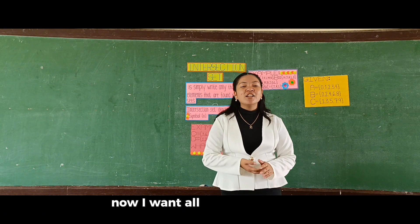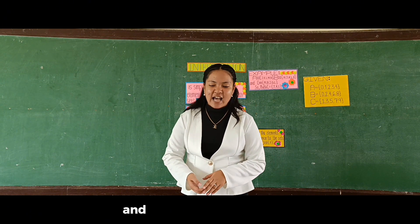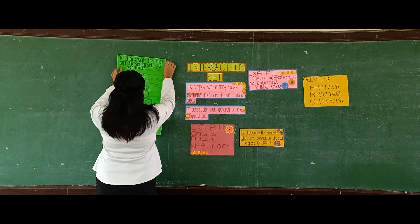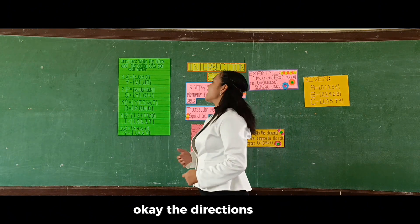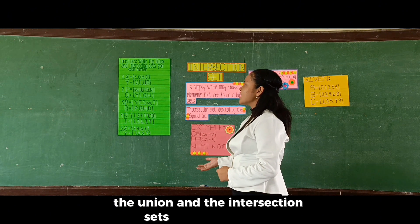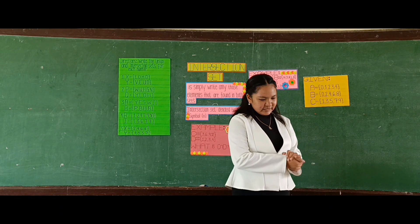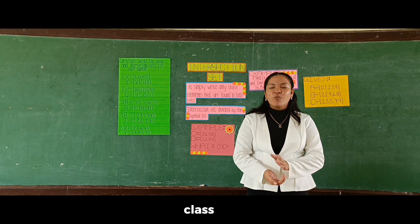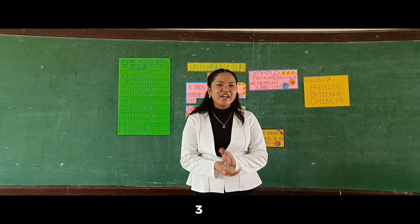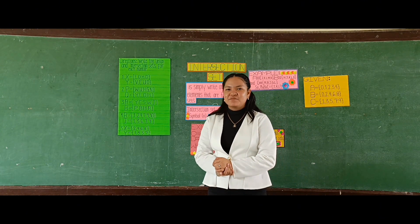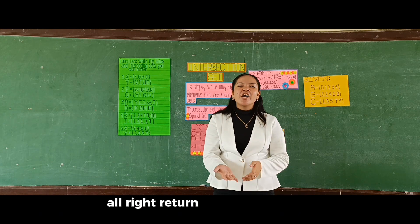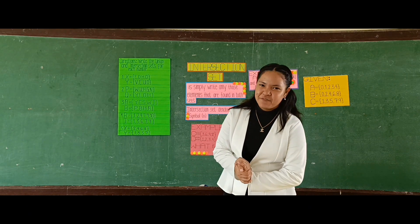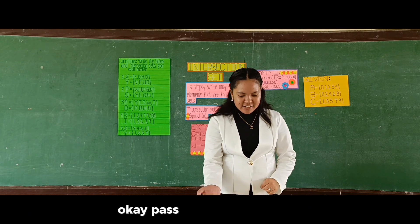Now, I want all of you to get one-half crosswise and answer these questions. The directions: write the union and the intersection sets for each number. Okay, done! Now exchange your paper clockwise, class. Alright! Return the papers.